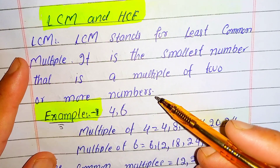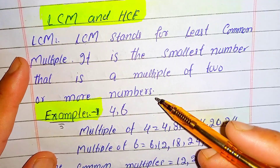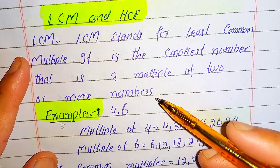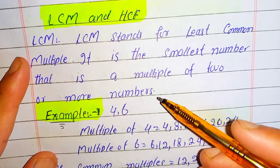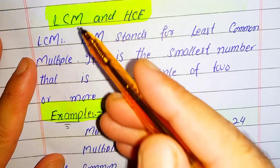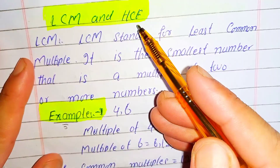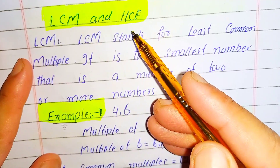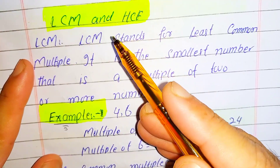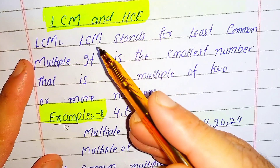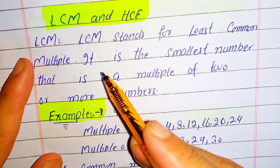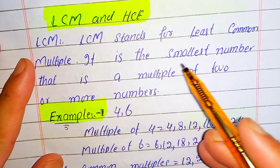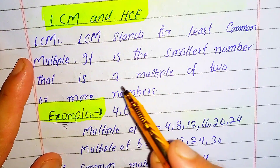Hi everyone, welcome back to SciMath Academy. Today we are diving into the most important topics in mathematics: LCM and HCF. We will start from the LCM. LCM stands for Least Common Multiple — it is the smallest number that is the multiple of two or more numbers.